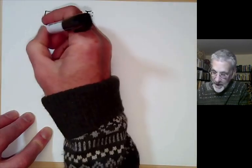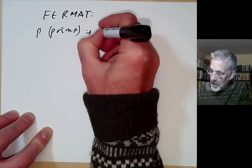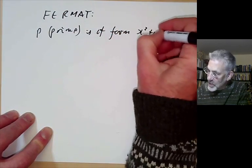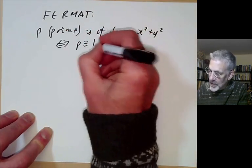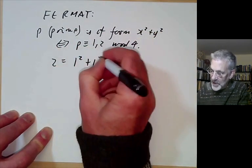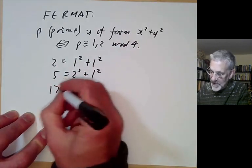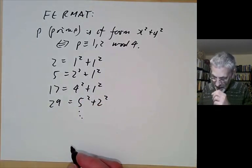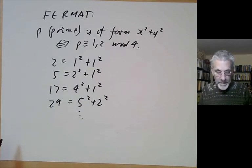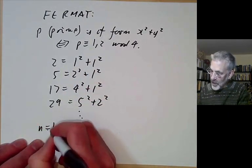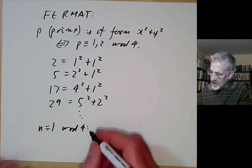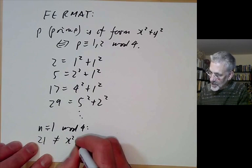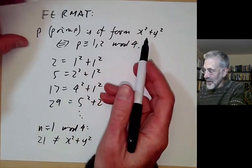We've now obtained Fermat's theorem: a prime p is of the form x² + y² if and only if p ≡ 1 or 2 mod 4. We can check: 2 = 1² + 1², 5 = 2² + 1², 17 = 4² + 1², 29 = 5² + 2². Note that if n ≡ 1 mod 4 this does not imply n is a sum of two squares — for example 21 cannot be written as x² + y² — so this result really requires p to be prime.